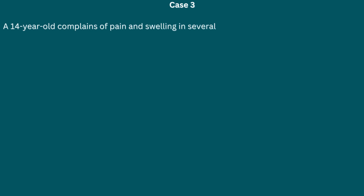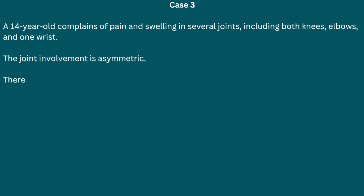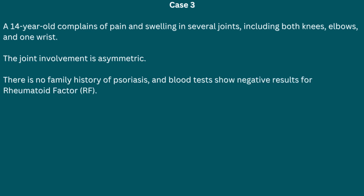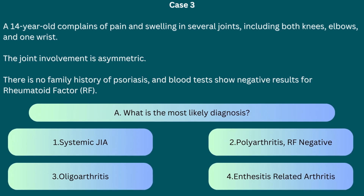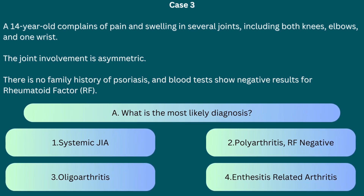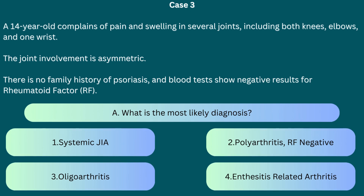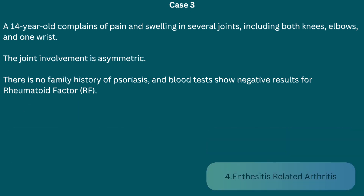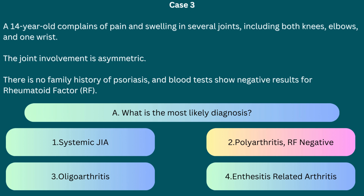Case number 3. A 14-year-old complains of pain and swelling in multiple joints, including both knee joints, elbow joints, and one wrist. The joint involvement is asymmetric and there is no family history of psoriasis. Blood tests show negative results for rheumatoid factor. Question A: What is the most likely diagnosis? The correct answer is 2 — polyarthritis rheumatoid factor negative — presenting as asymmetric arthritis in multiple joints with absence of rheumatoid factor, usually indicating a less aggressive disease course.